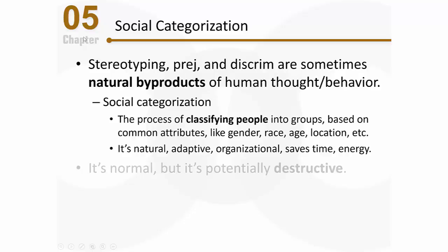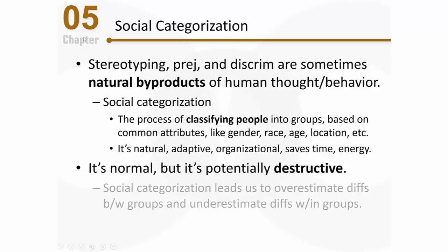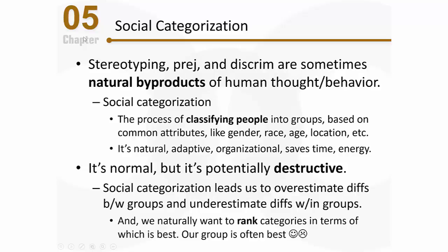Even though the social categorization process is normal, it is potentially destructive. Different groups — whether men and women or blacks and whites — are much more similar than we think, and not all men are alike. Social categorization leads us to overestimate differences between groups and underestimate differences within groups, which can lead to stereotypic beliefs, various biases, and discrimination.